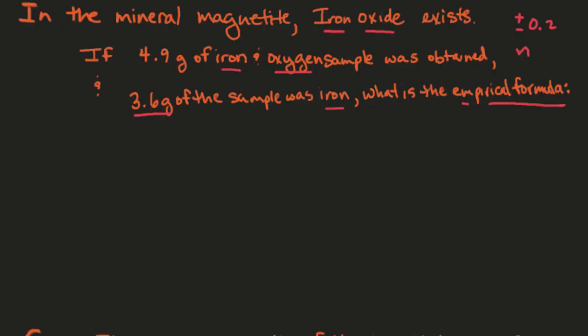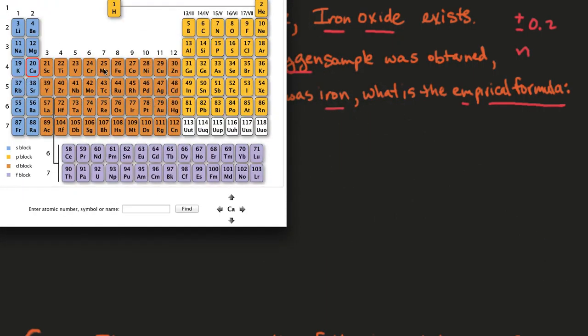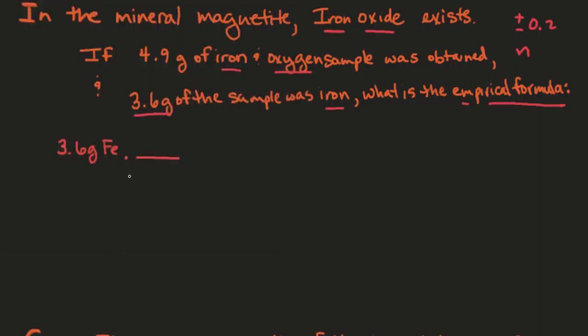Alright, so steps. First step should be to calculate moles. We can do that with iron. We have 3.6 grams of iron. If we look that up on the periodic table, iron is right there, and its mass is 55.845. That will cancel the grams of iron, leaving 1 mole of iron.